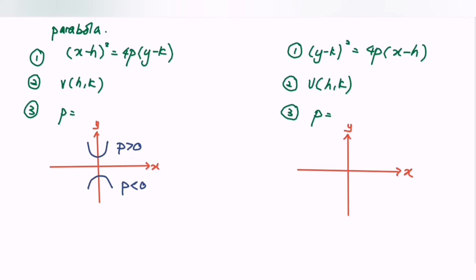Next we move on to the right hand side. For the standard form (y minus k) squared equals 4p multiplied with (x minus h), the graph will open towards the left or open towards the right. When p is less than zero, the graph opens towards the left. When p is greater than zero, the graph opens towards the right.